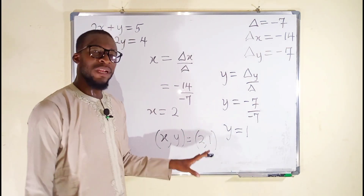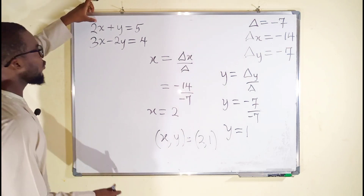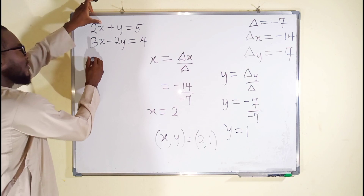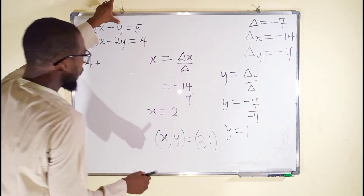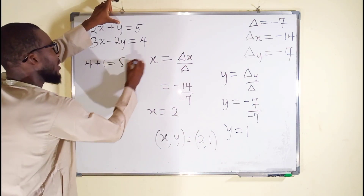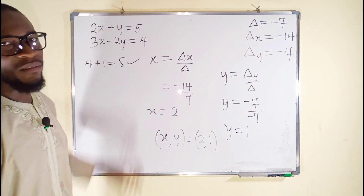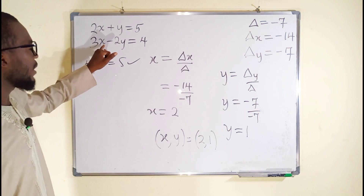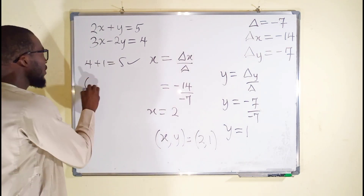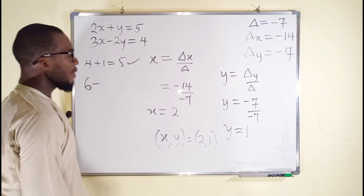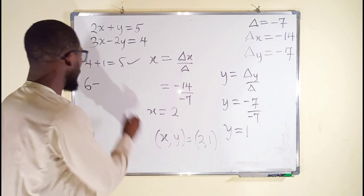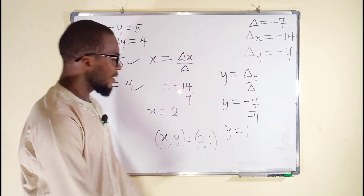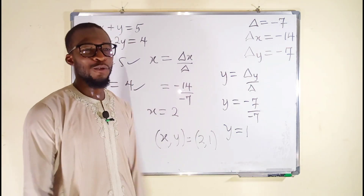You can check this in the main equations. For the first equation: 2 multiplied by x is 2 times 2, which is 4, plus y equals 1. Is this equal to 5? Yes, absolutely, because the right-hand side is 5. For the second equation: 3 multiplied by x is 3 times 2, which is 6, minus 2 multiplied by y is 2 times 1, which is 2. Is 6 minus 2 equal to 4? Absolutely. Hence, x equals 2 and y equals 1.